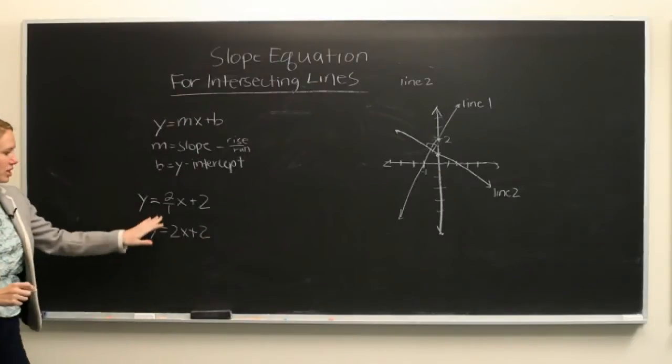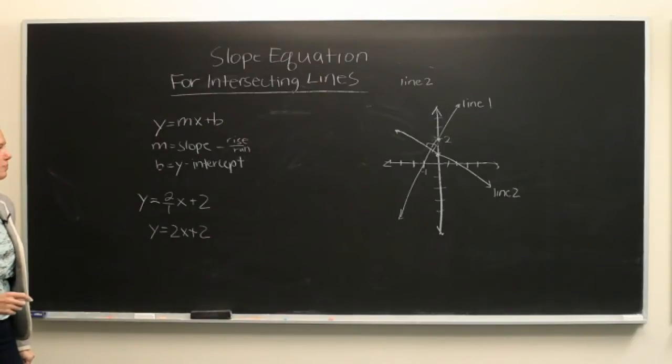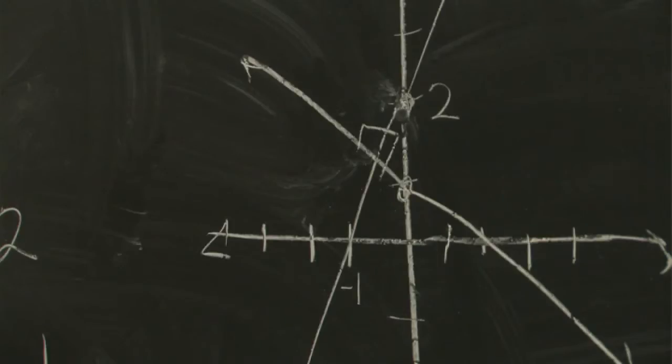This fraction can just be reduced from 2 over 1 to 2. So to get the slope of line two,